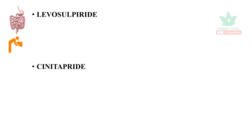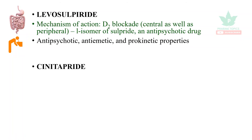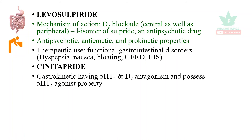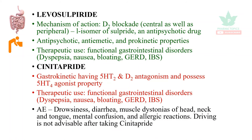Levosulpride: its mechanism of action is D2 blockade both centrally and peripherally. It is the L-isomer of sulpiride, an antipsychotic drug, with antipsychotic, antiemetic, and prokinetic properties. Therapeutic uses include dyspepsia, nausea, bloating, GERD, and irritable bowel syndrome. Cinitapride is a gastrokinetic with 5-HT2 and D2 antagonism and 5-HT4 agonist properties. Uses are similar to levosulpride. Adverse effects include drowsiness, diarrhea, muscle dystonias of head, neck, and tongue, mental confusion, and allergic reactions. Driving is not advisable after taking cinitapride.